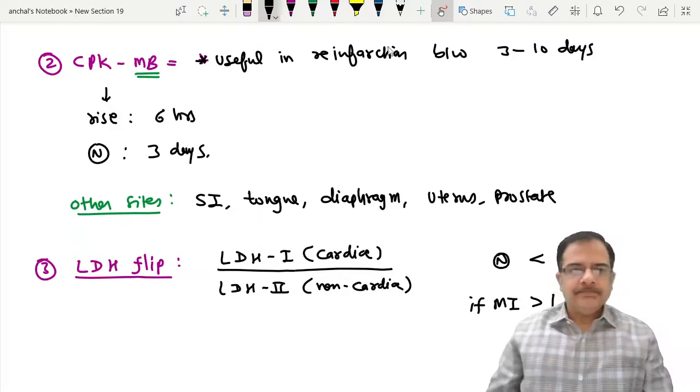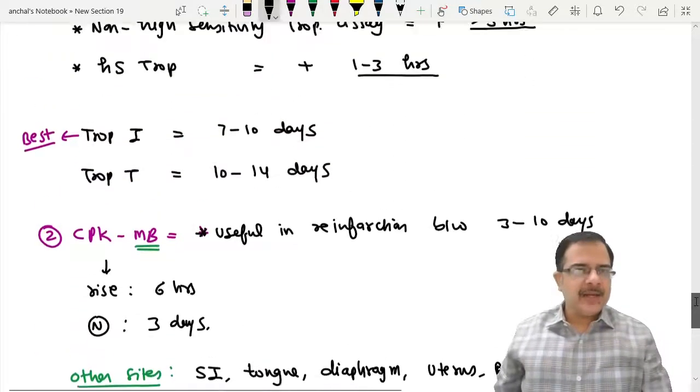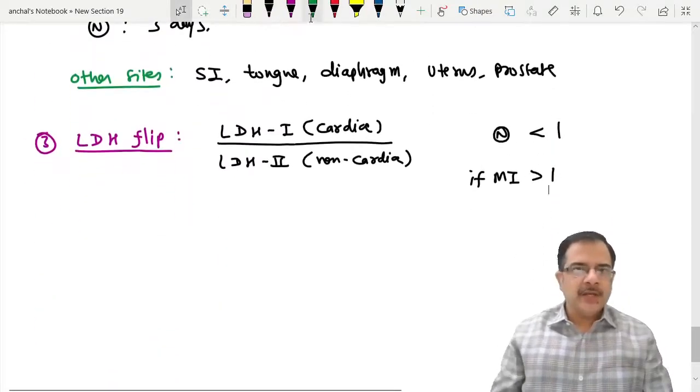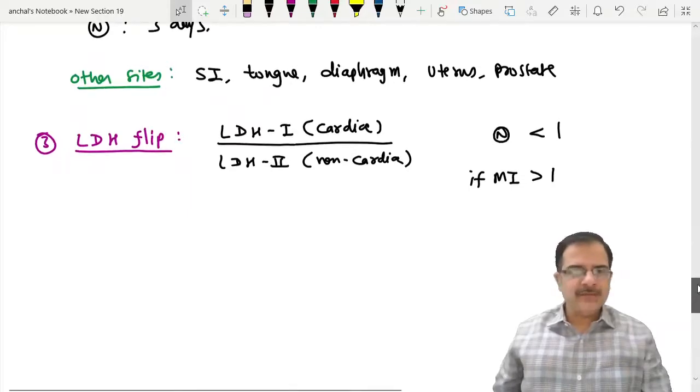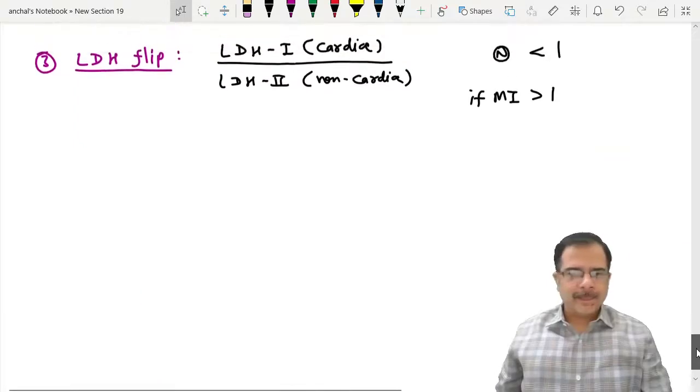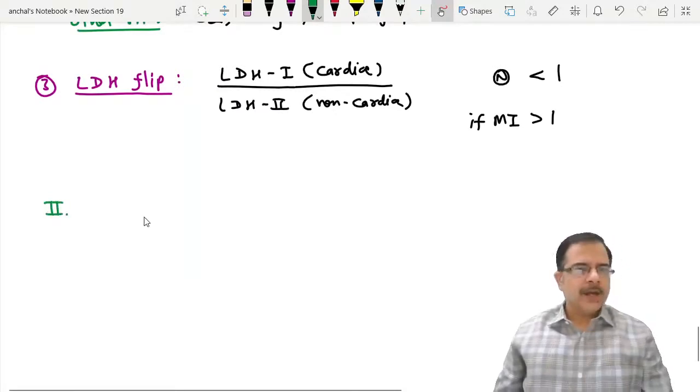These are the cardiac markers. There can be other blood tests also which have some prognostic significance. Number two, other biomarkers.